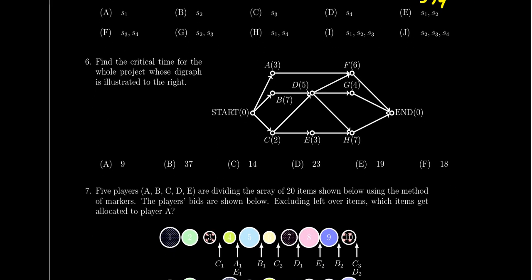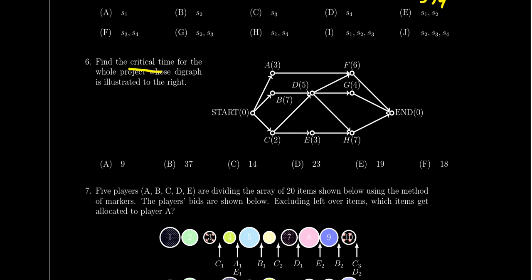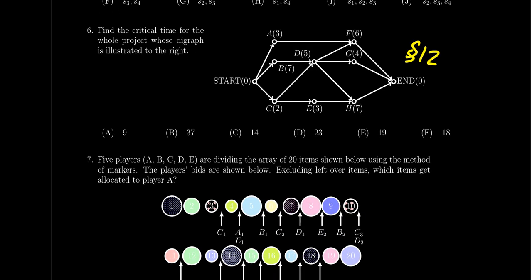Question six is about scheduling — you're given a project digraph with all precedence relations and processing times labeled, and asked to find the critical time for the whole project. You can run the backflow algorithm, though this graph is small enough you may be able to skip some steps. This comes from lesson 12. Note that a more complicated project digraph will appear in the free response section where all steps must be shown.